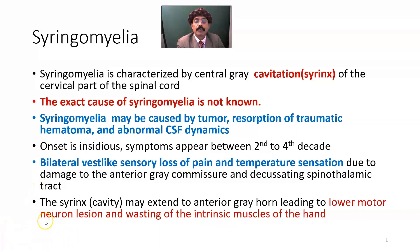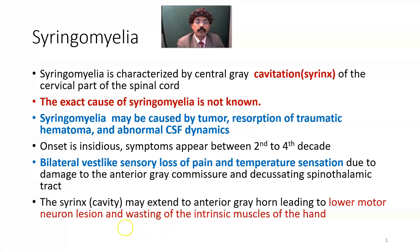The syrinx cavity may extend to the anterior grey horn, leading to lower motor neuron lesion and wasting of the intrinsic muscles of the hand. Because of the involvement of the brachial plexus lower trunk and ulnar nerve, there will be wasting of the intrinsic muscles of the hand.